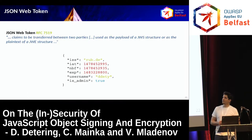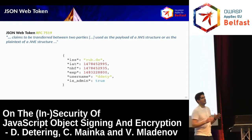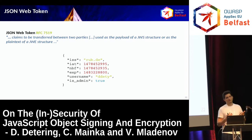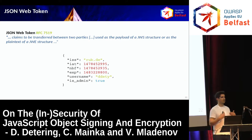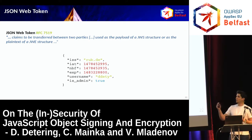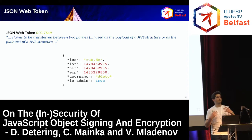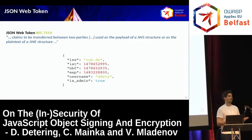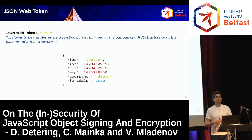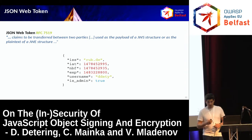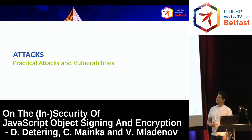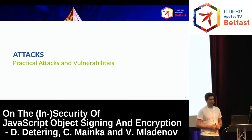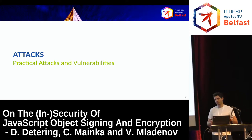Last but not least, the JSON Web Token specification describes so-called claims — assertions about a subject you may optionally use. For example, ISS is the issuer, IAT is issued-at, not-valid-before, and expiration. These are best practices you might use to protect against replay attacks or to use this token as a session token. Now comes the interesting part — the attacks and vulnerabilities we analyzed.